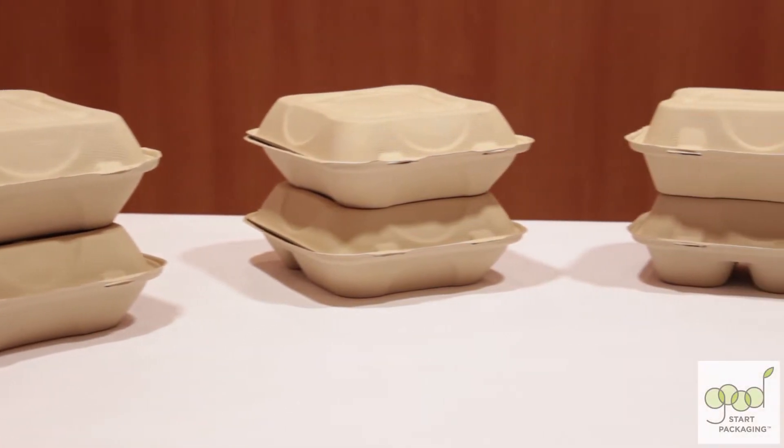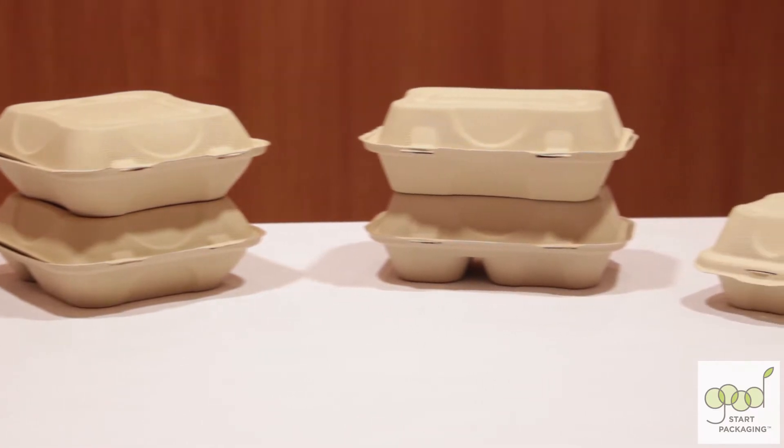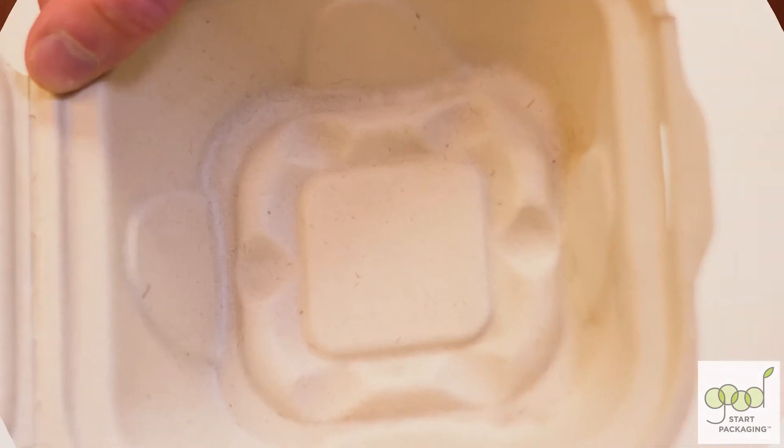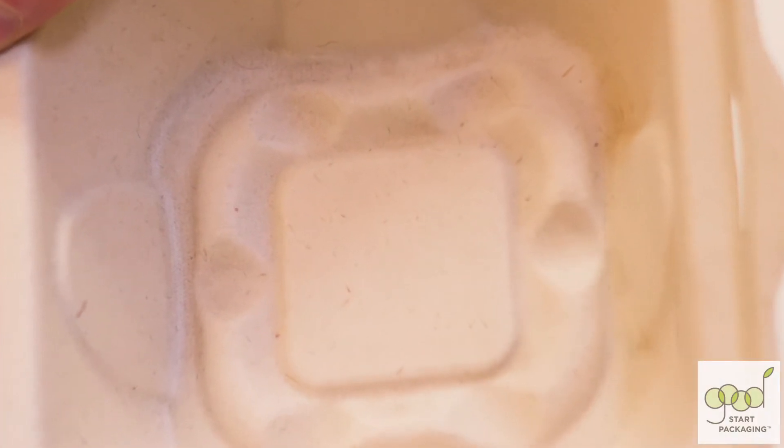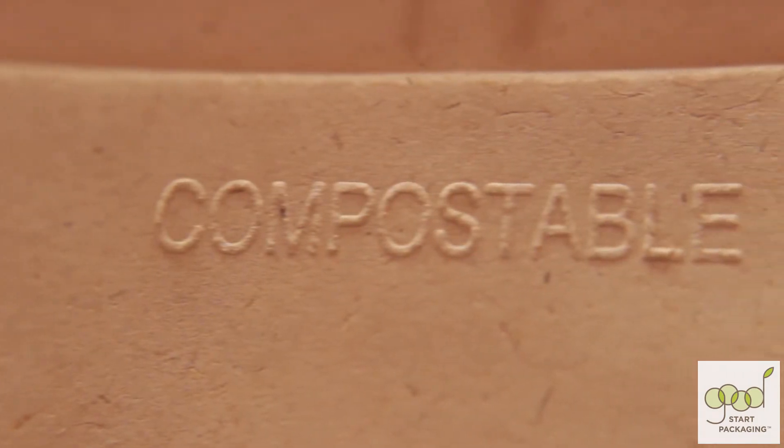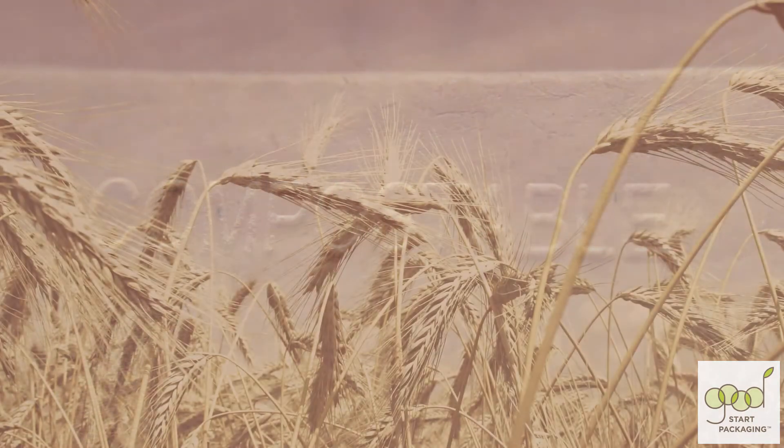These fiber clamshells are an economical and versatile container that can serve many purposes. They're made from unbleached wheat straw fiber. Wheat straw is a renewable resource that is leftover from wheat agriculture.